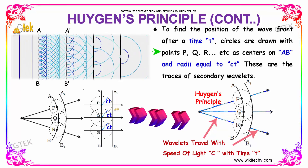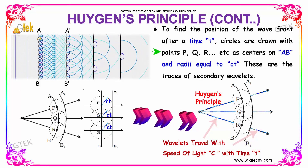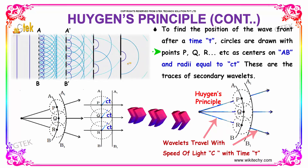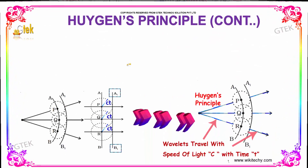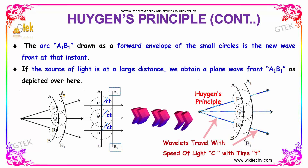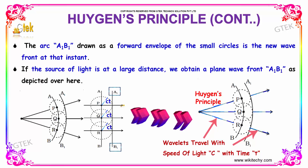These are the traces of secondary wavelets. These points are the sources for the wavelets — this is the source of this wavelet, and this is the source of that wavelet. That's Huygens principle. The arc A1B1, drawn as a forward envelope of the small circles, is the new wavefront at that instant. If the source of light is at a very large distance, we obtain a plane wavefront A1B1, which is depicted over here.